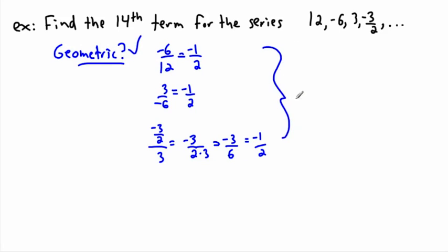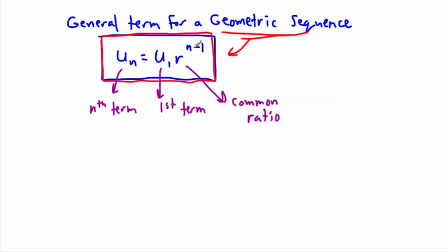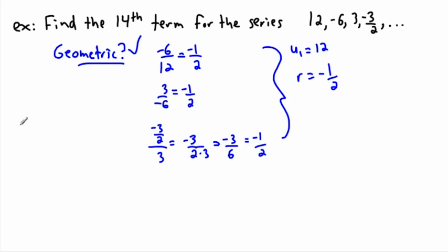And in fact this helps me because I know my common ratio is negative 1 half, and I know u1, the first term, is 12. Now this is easy. Now I just plug in this equation here.